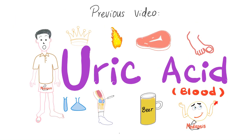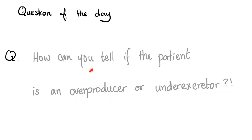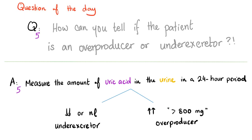Please make sure to watch the previous video before this one. The question of the last video was: how can you tell if the patient is an over-producer of uric acid or an under-excretor of uric acid? Because both of them can lead to hyperuricemia. So how can you tell the difference? Here is how you do it.